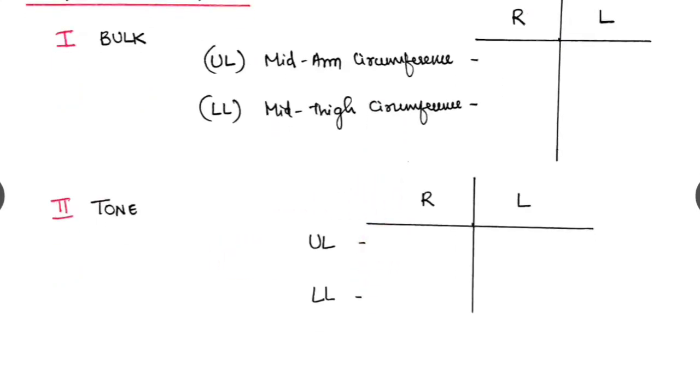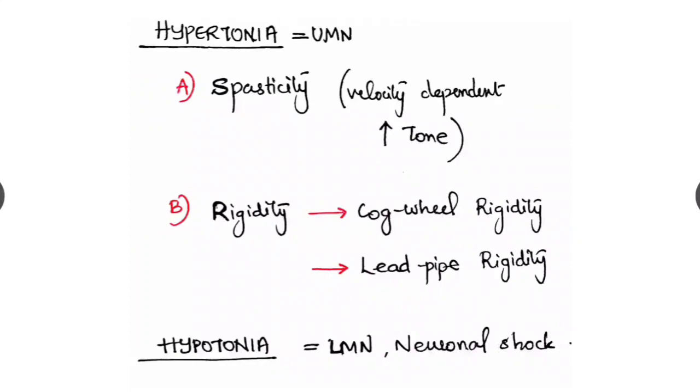Tone. We tabulate it right and left, and upper limb and lower limb we have to check separately. The tone can be hypertonia or hypotonia. Hypertonia is seen in UMN palsy. Hypotonia in LMN palsy, neuronal shock stage, etc.